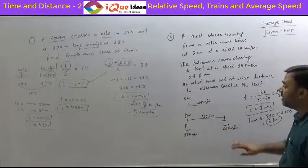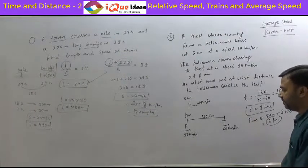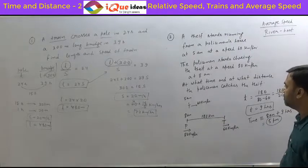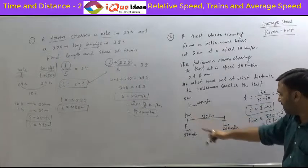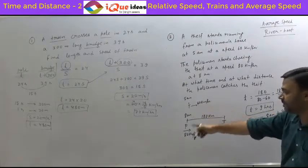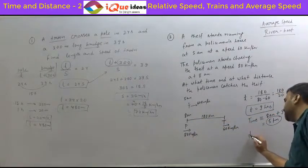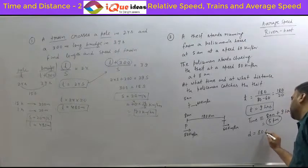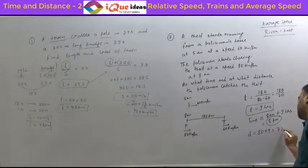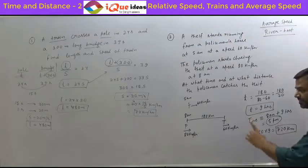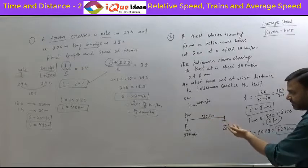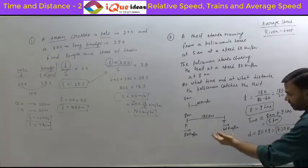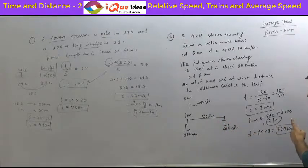The second part of the question is: at what distance from the policeman's house will the thief be caught? The policeman started at 8 a.m. and has traveled for 9 hours at a speed of 80 kilometers per hour. So the distance is 80 multiplied by 9, which is 720 kilometers.